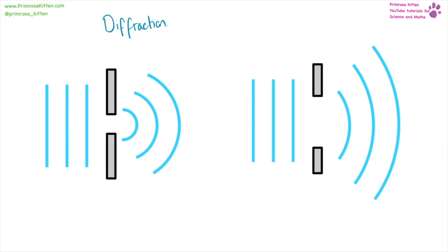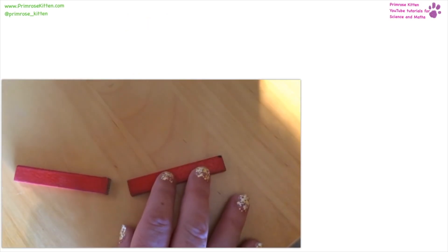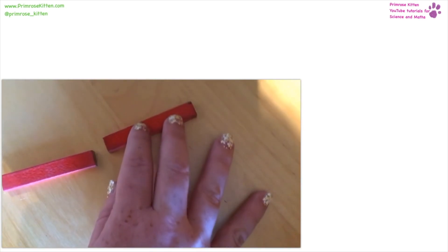Diffraction happens when a wave passes through a gap. Here we have a small gap and a large gap, and the wave will curve around as it comes out of that gap. The amount of diffraction will depend on the size of the gap. Refraction happens when a wave passes from one medium into another — for example from air into glass or air into water — and it will change direction as it passes through.